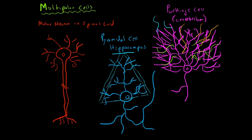So that's it for the different classifications of neurons. So we discussed the unipolar cell, the bipolar cell, the pseudo unipolar cell, and the three different types of multipolar cells.